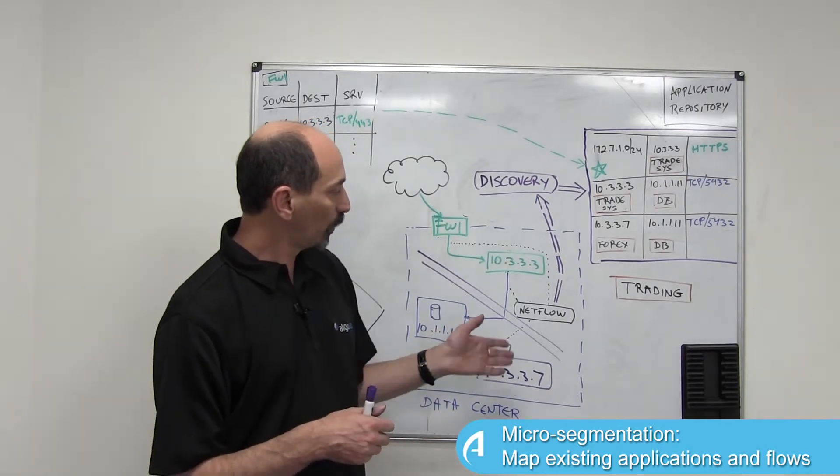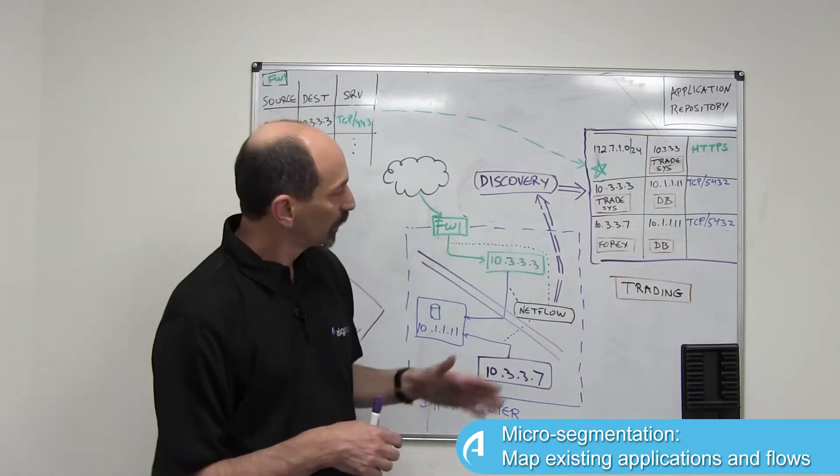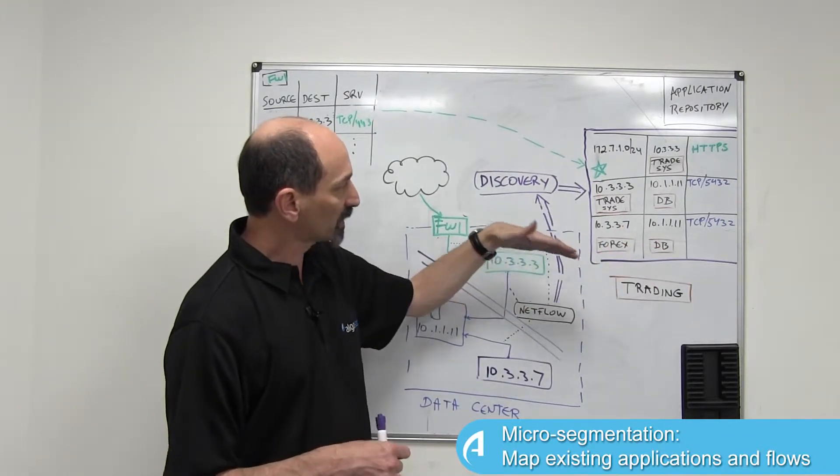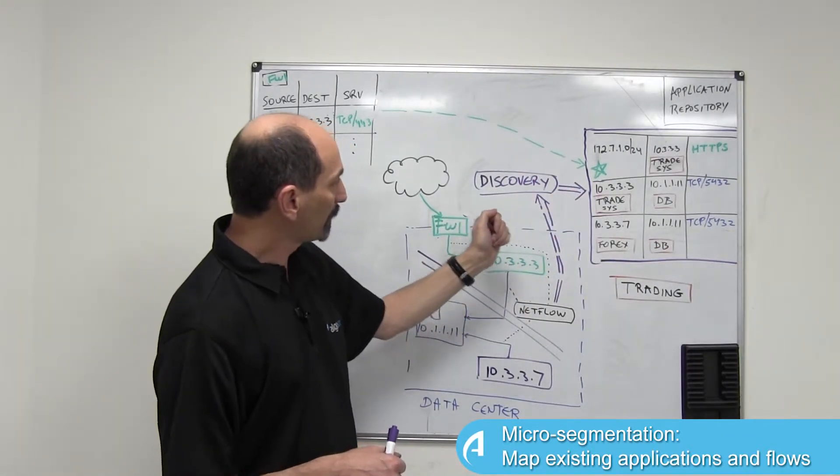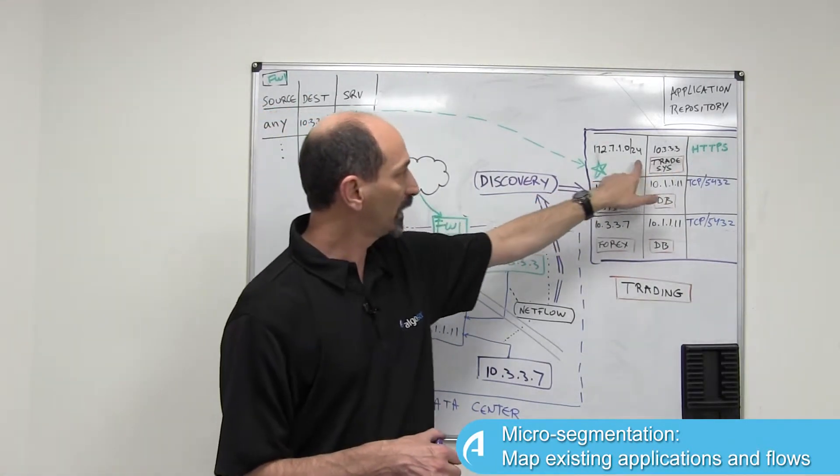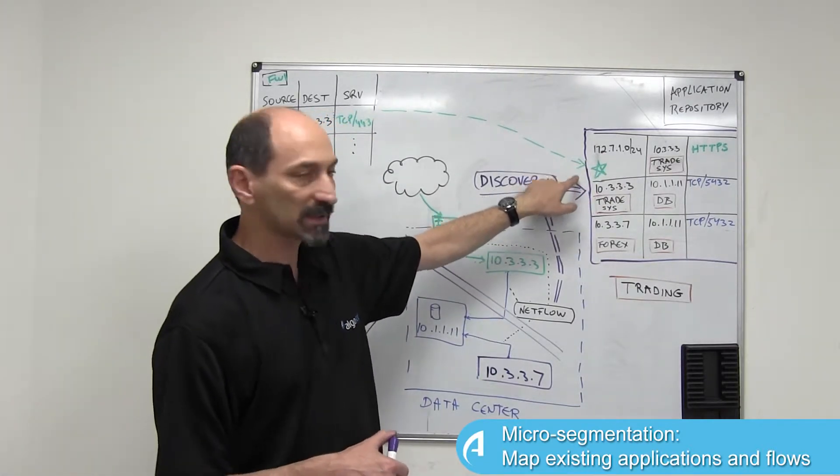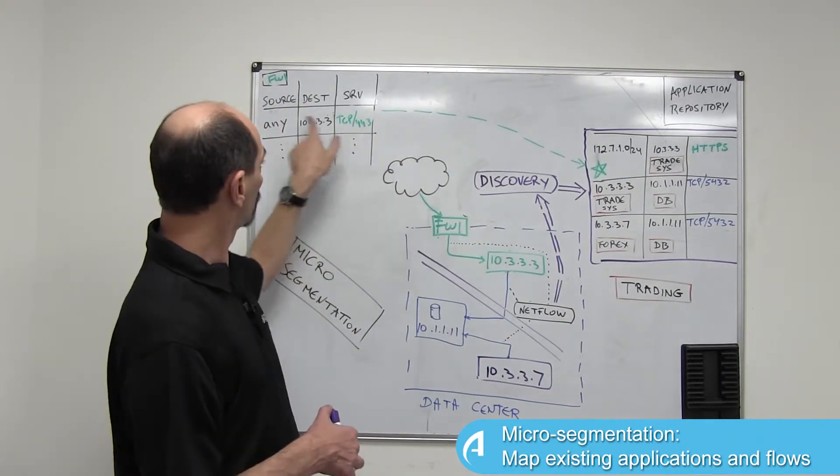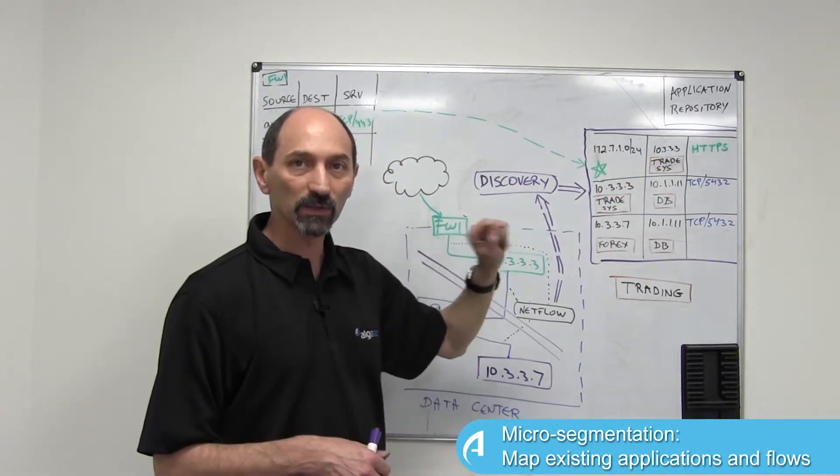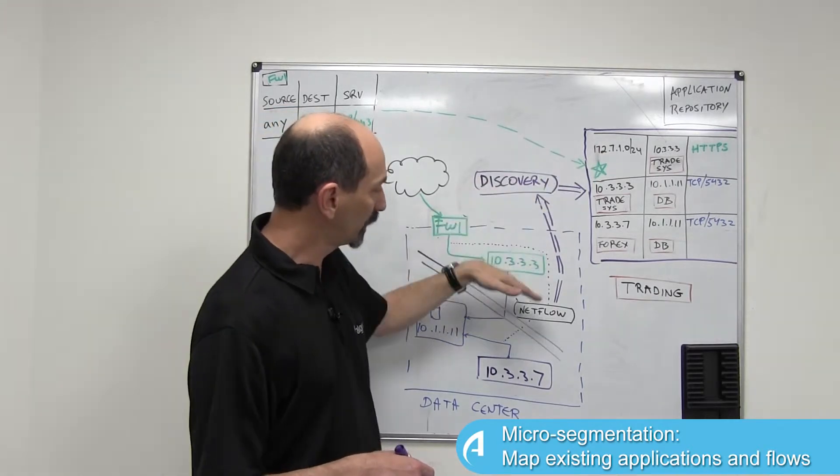So how do you know which rules you need to add to this purple filter that you're preparing? Well if you look at the flows that came out of the discovery process it's possible to annotate them automatically based on information from the existing firewalls. For instance this flow over here we can see is annotated with a green star, that means that there is an explicit rule in one of the firewalls over here that permits this traffic. Therefore this flow is already filtered and you don't necessarily need to add another rule for it when you micro segment.